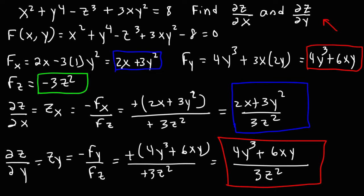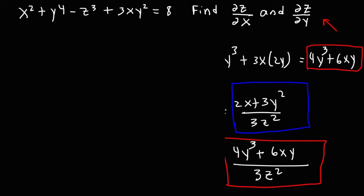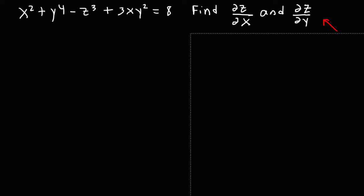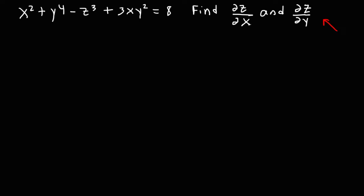Now let's use another method to get the same two answers. We're going to use implicit differentiation on this equation. Let's find the partial derivative of z with respect to x first.